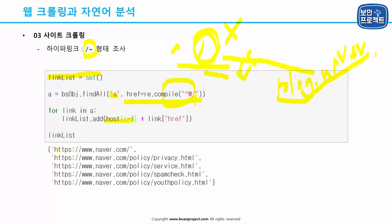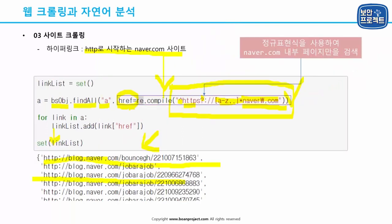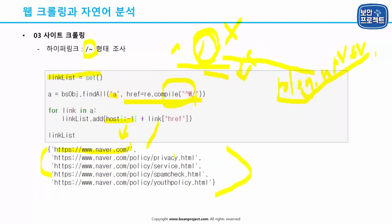그렇기 때문에 현재 검색하고 있는 www.naver.com을 이 절대 경로 앞에 추가해서 완전한 URL 형태로 만들어 놓았습니다. 앞에 있는 HTTP로 시작하는 링크들과 같은 형태로 만들어 명확하게 내용을 넣어놓은 것입니다.